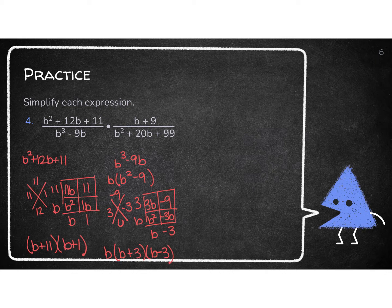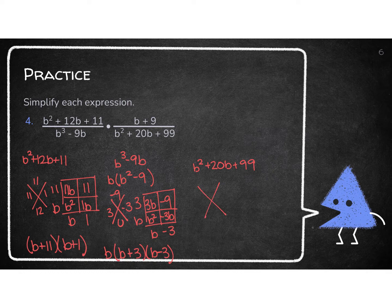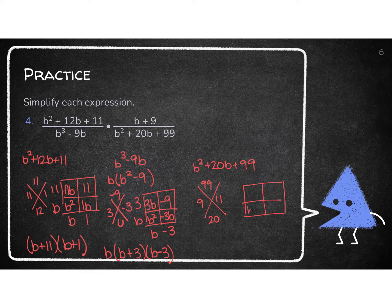The top of the second fraction is just B plus 9 — there's no GCF, no B squared, so I don't need to factor it. Now the bottom of the second fraction: B² plus 20B plus 99. No GCF here, but there is a B squared so I need to factor it. 99 on top, 20 on the bottom — numbers that multiply to 99 and add to 20 are 9 and 11. Setting up the box: B², 9B, 11B, and 99. That gives me B plus 9 and B plus 11.